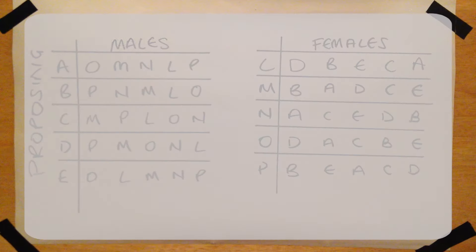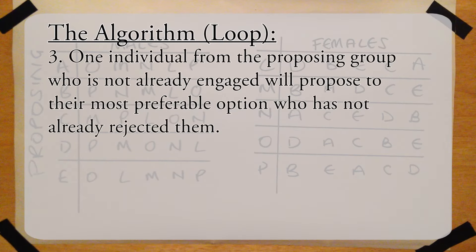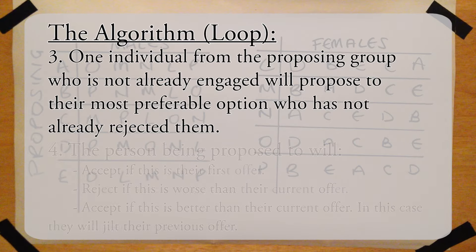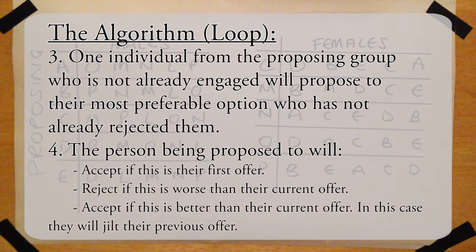The next part of the algorithm is a looping section. One person from the proposing group, in our case the males, who is not already engaged will propose to his most preferable choice who has not yet rejected him. The female that has been proposed to must decide whether to accept or reject the proposal. If she has not previously received an offer, then she will accept. If she has received a previous offer, but the first offer is still more preferable, then she will reject. If she has received a previous offer, but the new offer is more favorable, then she will jilt or reject the previous proposal and accept the new one.